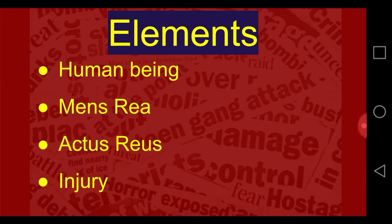Let's see further what the elements inside this definition are. The first element is it should be committed by a human being — that is the basic and foremost element. Next is mens rea, which is nothing but the intention — the evil, ill intention of a person to harm or injure someone.